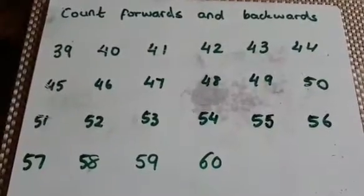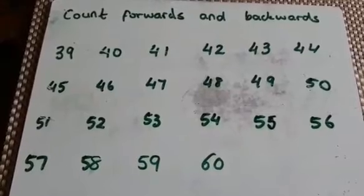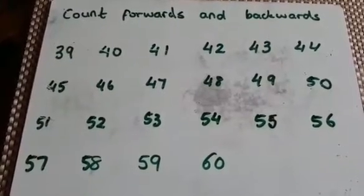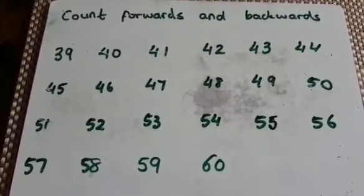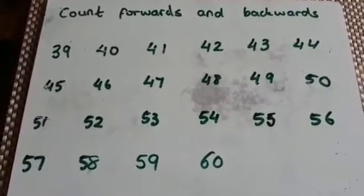Let's count forwards and backwards. Pause the video and count forwards from 39 all the way to 60, and then count backwards from 60 all the way to 39.